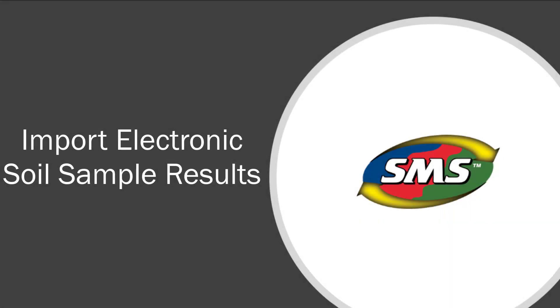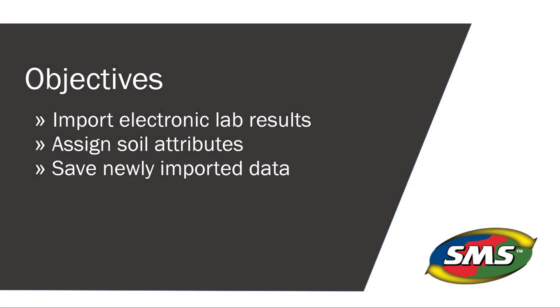The software provides the capability to import soil sample lab results in an electronic format. Files can be imported and linked to the soil sample points that you previously created and sampled. Not only can you import results directly in the Soil Sampling Editor, you can also import results from the main mapping window. In this tutorial, you will learn how to import electronic lab results, assign the soil attributes, and save the newly imported data.